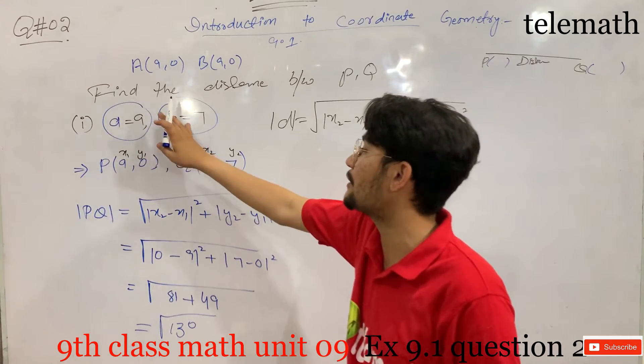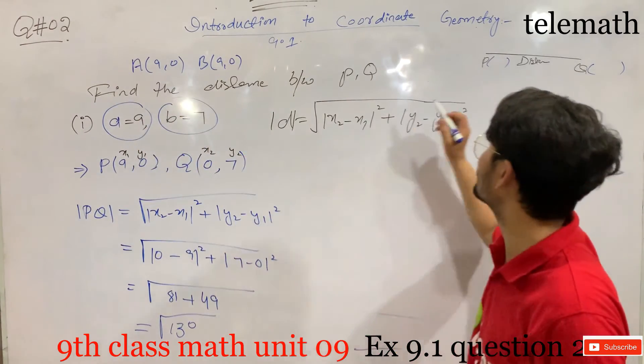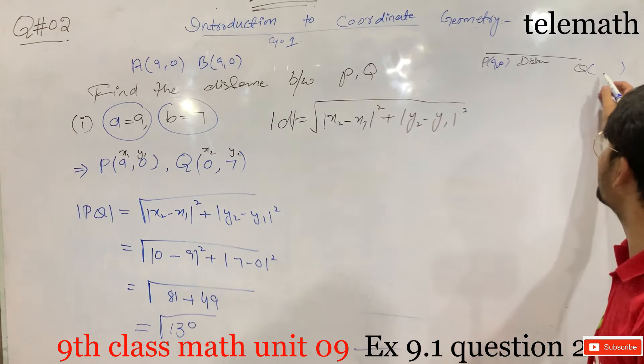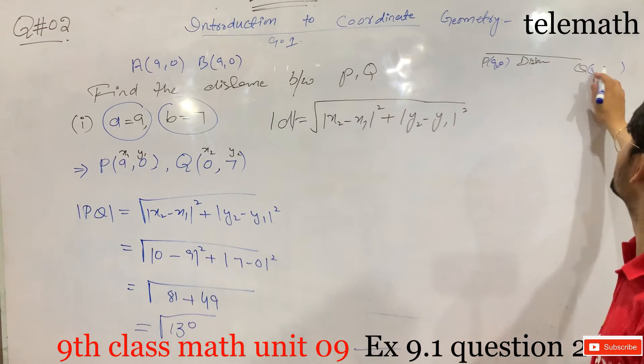So the answer is root 130. To repeat: P is (9, 0) and Q is (0, 7), and the distance PQ is root 130.